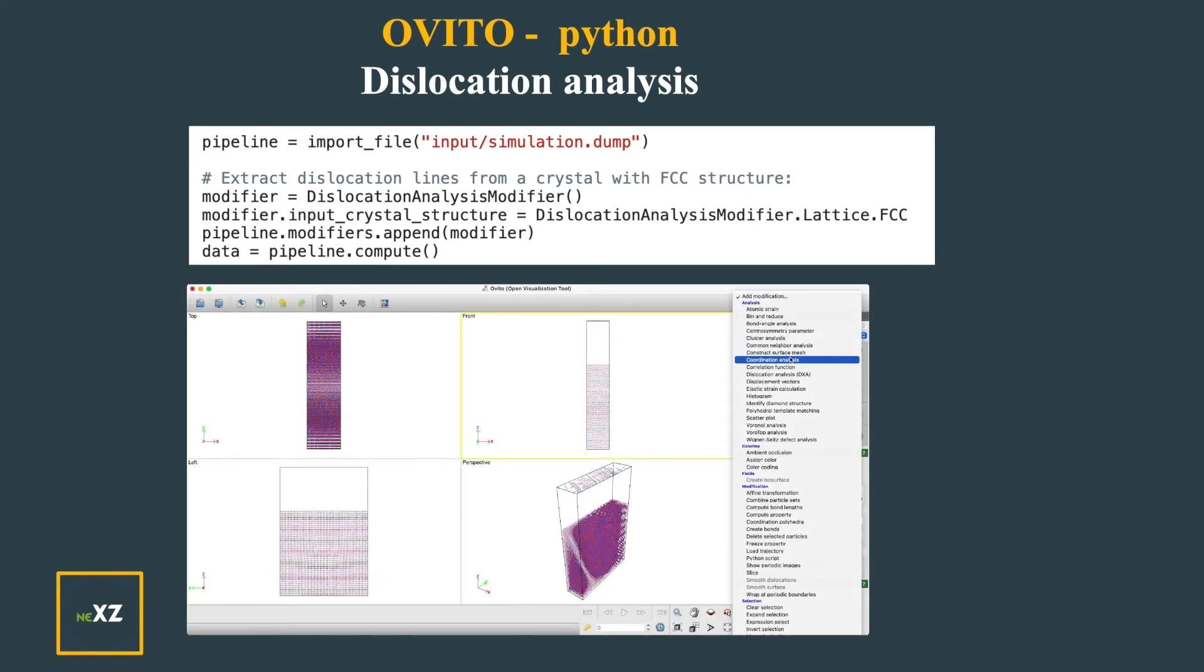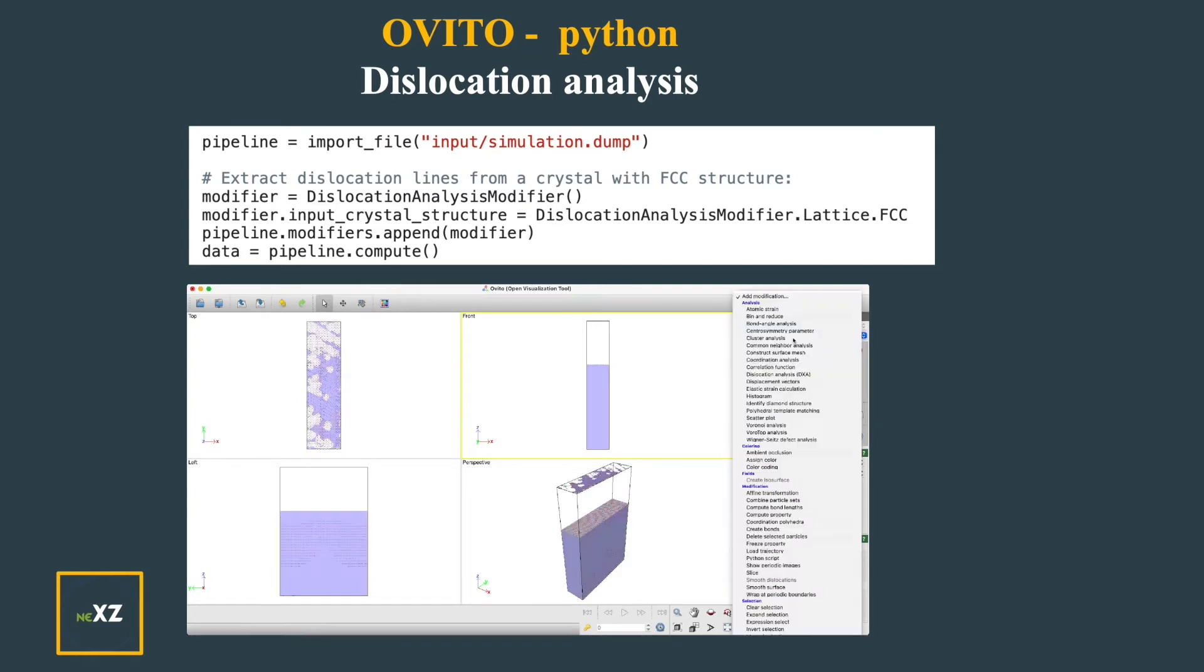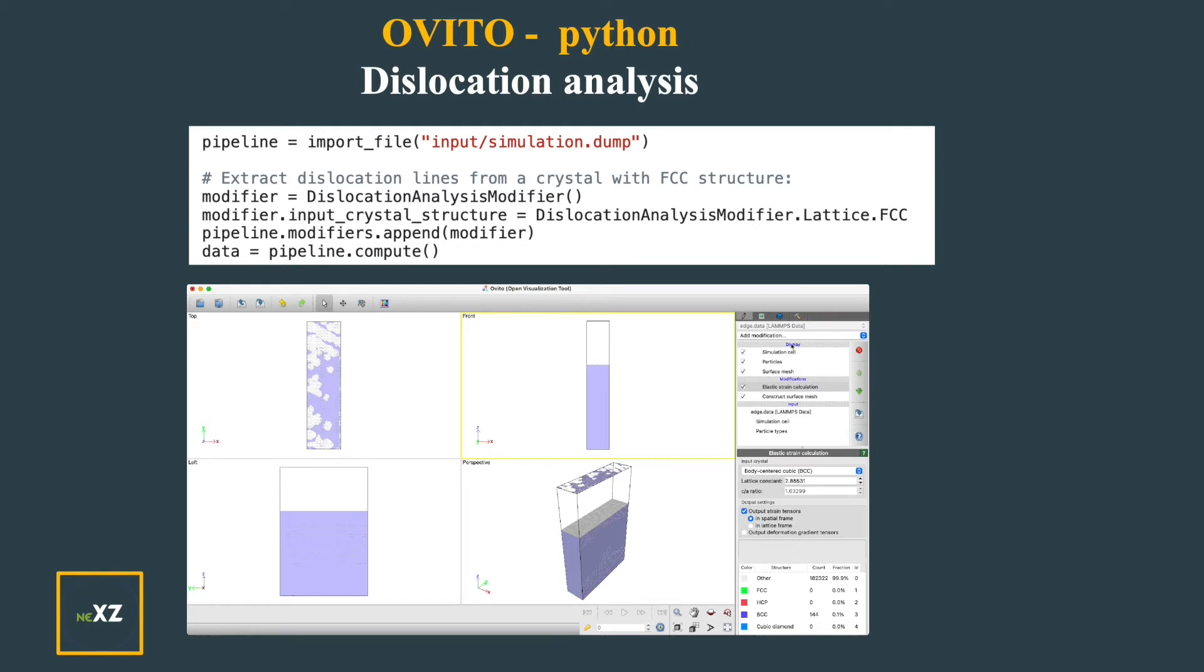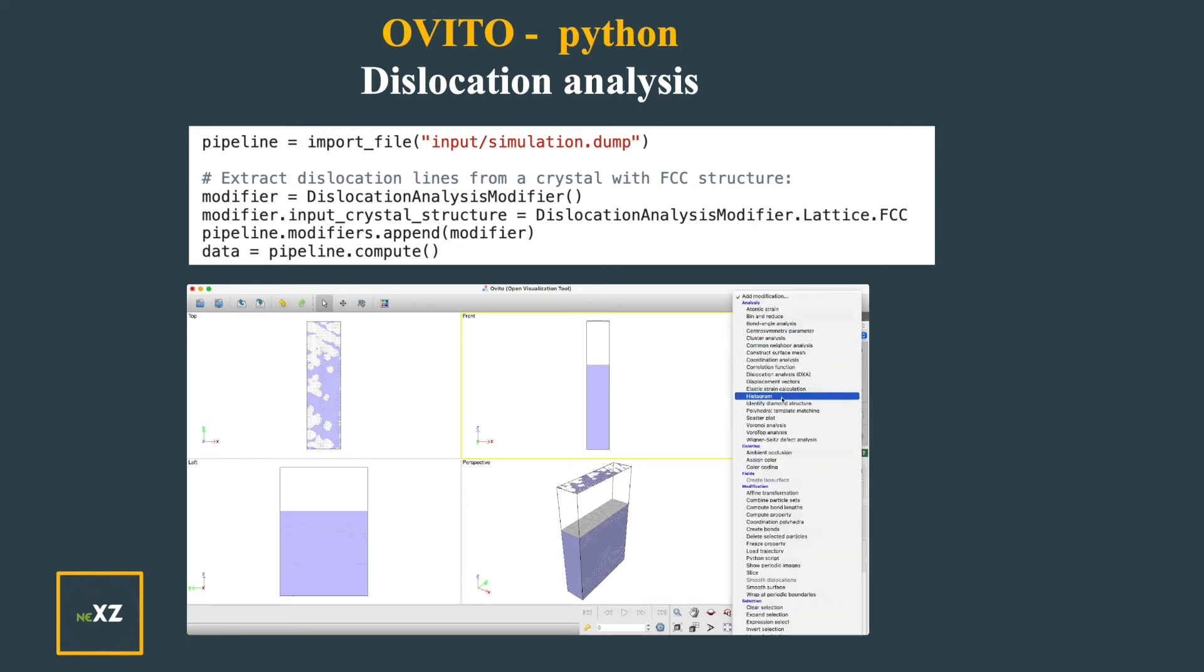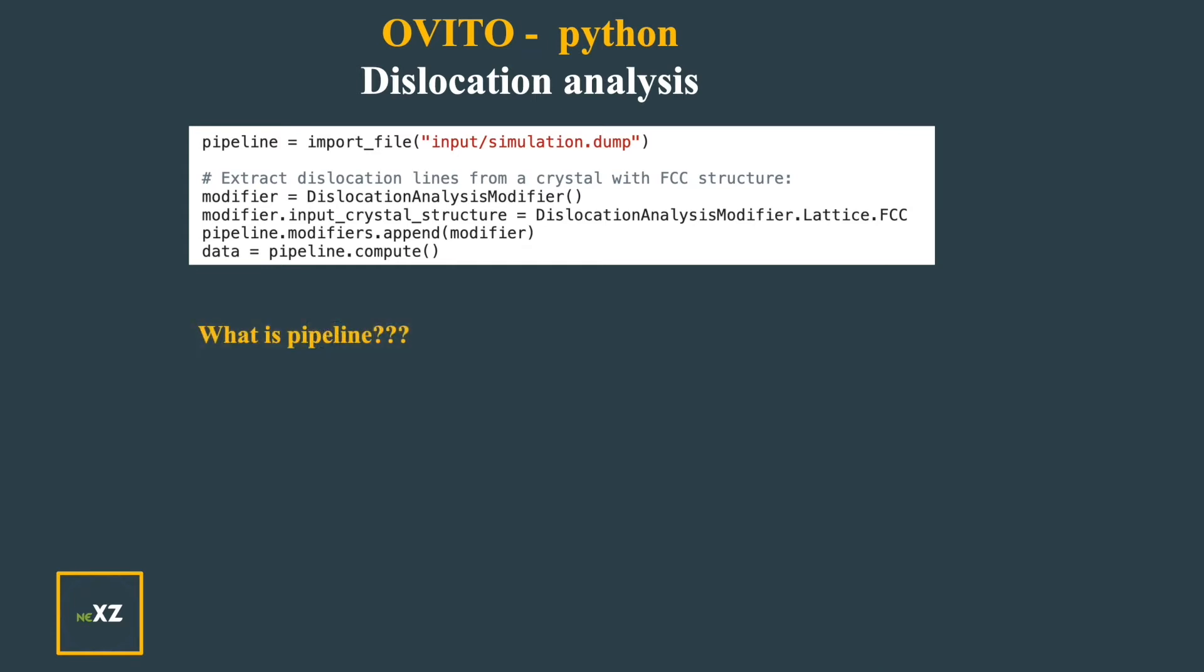So if you see I can have a dislocation and I can add some modifications or modifiers on the right side. So I am doing some data or analysis on the right side. I will zoom this and show you how does a pipeline look like.